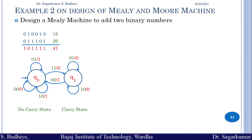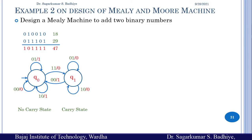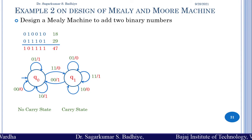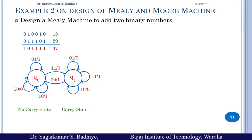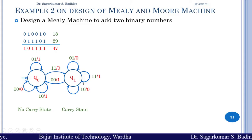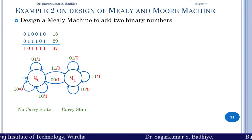The last input possibility in q1 is 11. If input is 11 in q1, then 1 plus 1 gives 0 with a carry, and the existing carry plus that carry gives output 1. So we produce output 1 and stay in q1, because a carry is still present. We have now covered all input possibilities in both states.